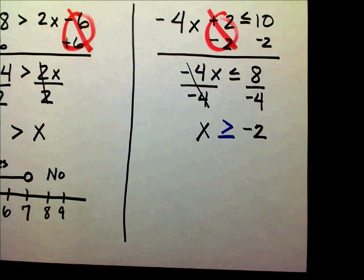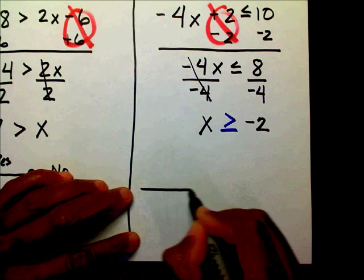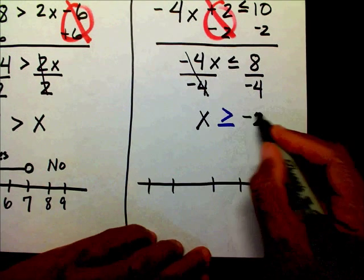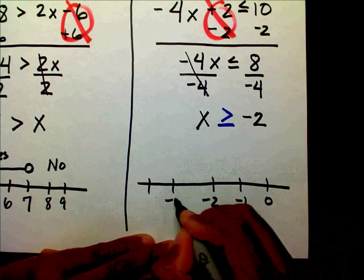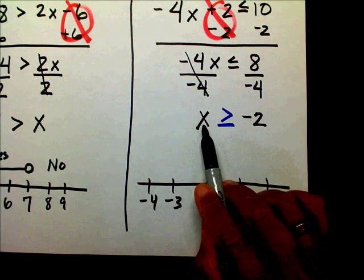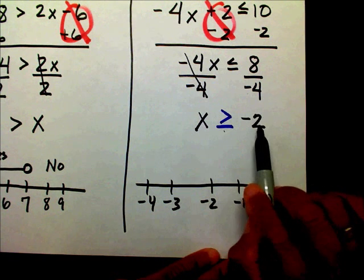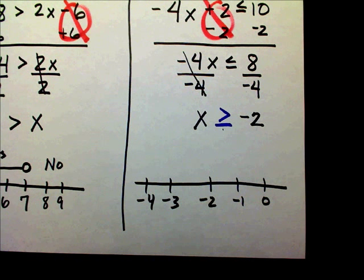Since we divided by a negative number, we're going to change it to greater than or equal to. Now let's graph it on our number line. Everything revolves around negative 2. x is greater than or equal to negative 2. It could be greater than or it can be equal to — one or the other.